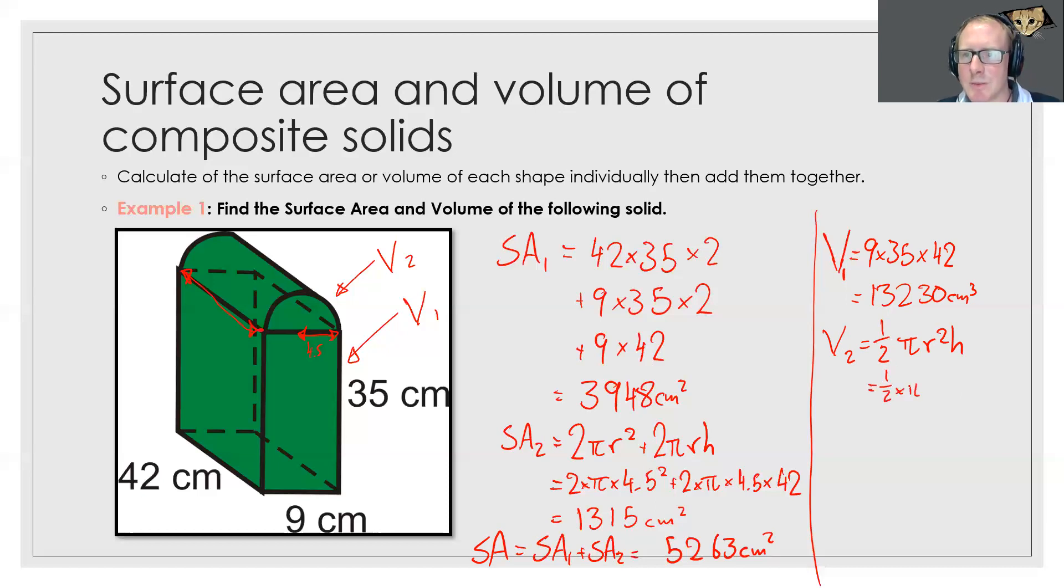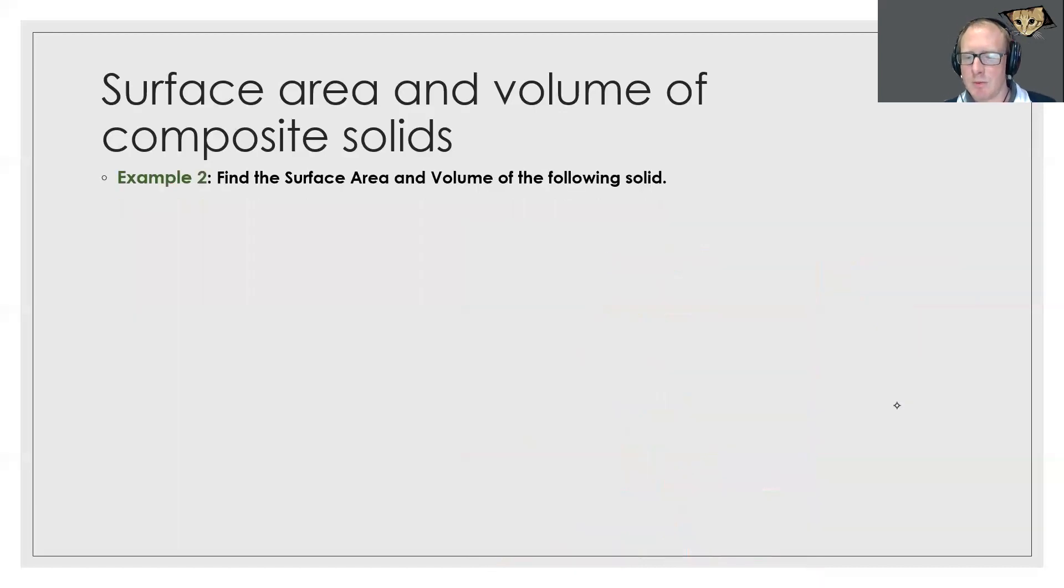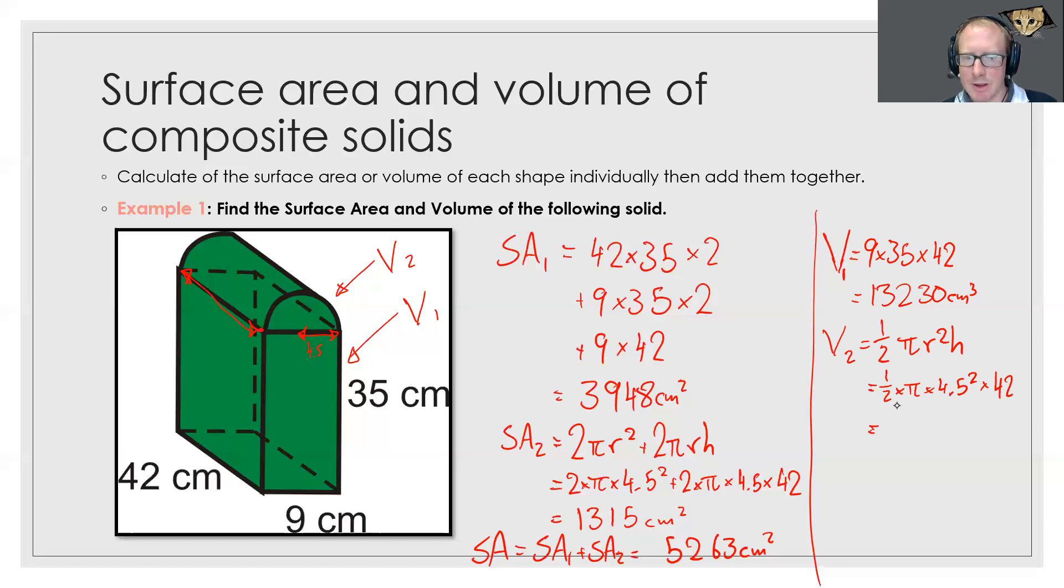So we've got ½ times π times my radius which is 4.5² times by my height which is 42 again. We quickly put that in my calculator and I get 1336, we'll round that up. Again our total volume is just the volume of the rectangular prism plus the volume of our cylinder which we have come out to be 14,566 centimeters cubed.